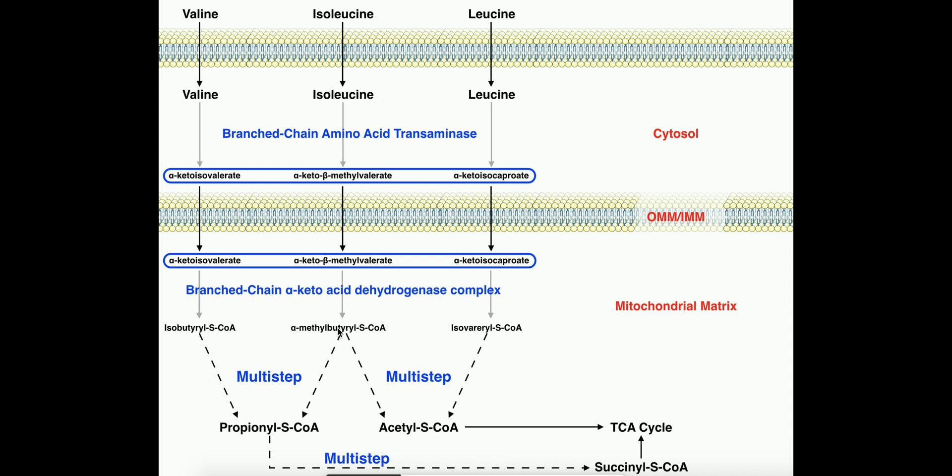And so these metabolites down here, isobutyryl-CoA, alpha-methylbutyryl-CoA, and isovaleryl-CoA, are all reduced by one carbon from their corresponding alpha-keto acid, and now are linked to a coenzyme A.